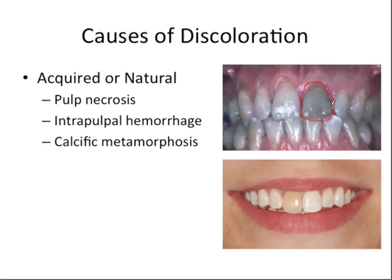Here is an example of a tooth that has undergone pulp necrosis. If we're bleaching from the outside it's not going to be as effective as if we bleached from the inside, because that's where the discoloration byproducts — the byproducts causing this grayness — have originated from. So we want to bleach from the inside out.